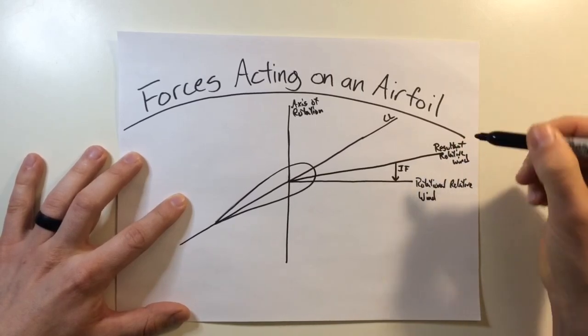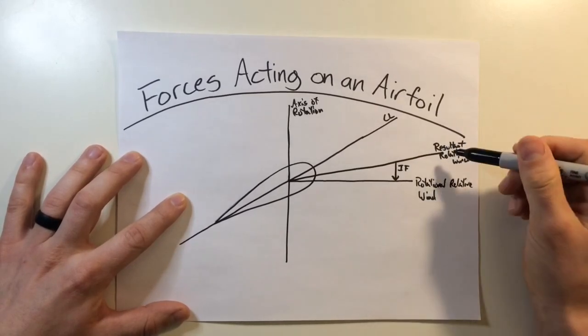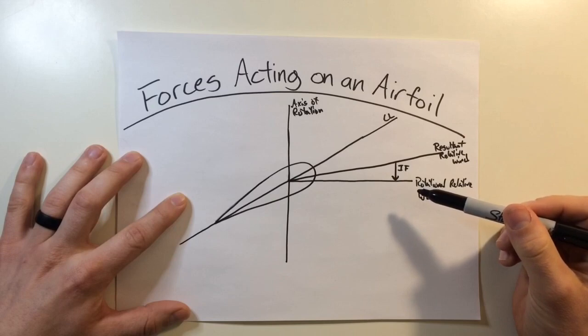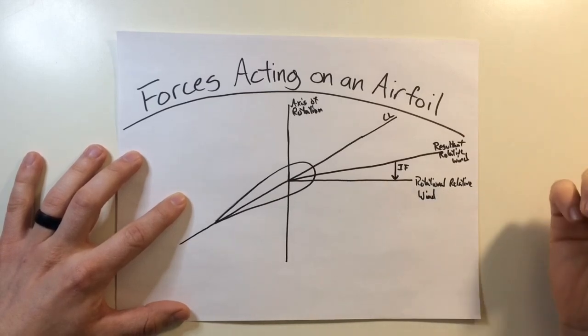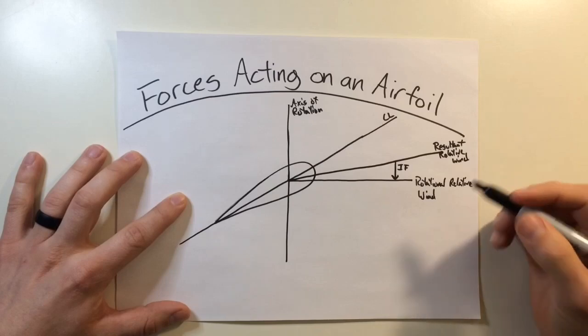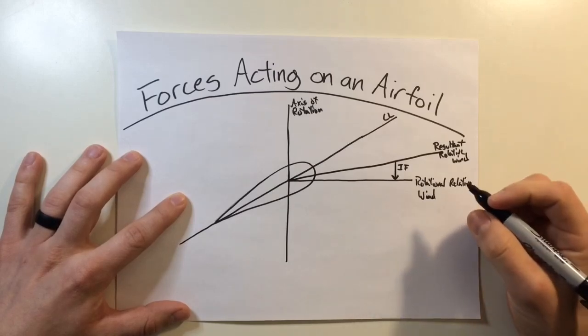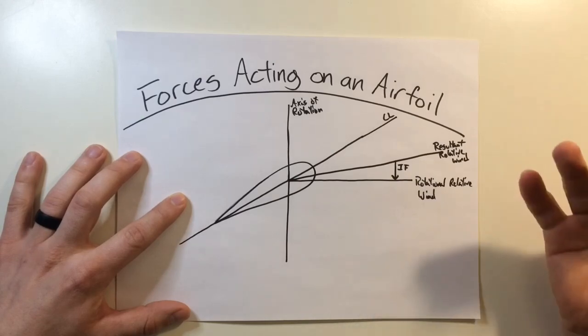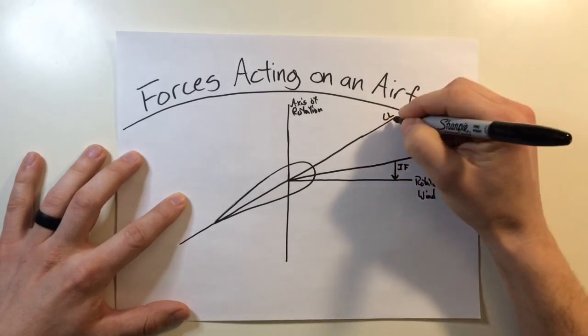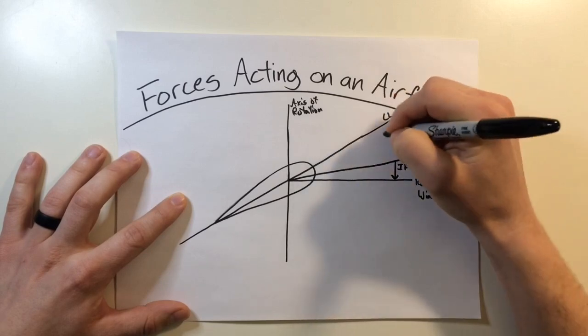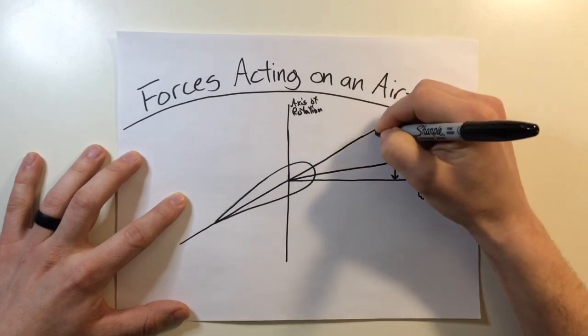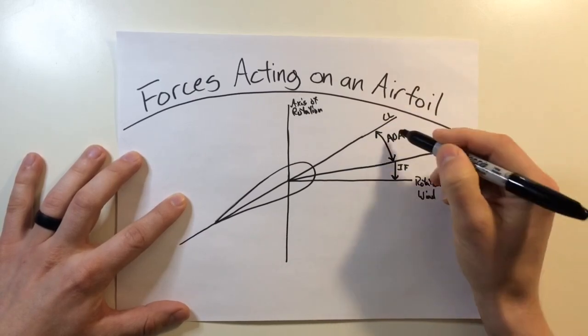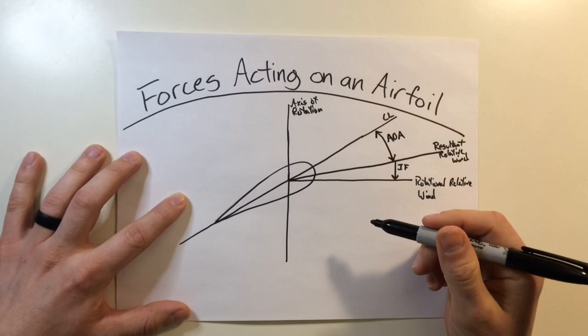And just like the name implies, this is the result of the relative wind as we modify it for induced flow. Now it's from here that we can find things like our angle of attack, which is going to be where we get lift from. Our angle of attack is the angle between the cord line and the resultant relative wind, and it depicts the amount of lift that the airfoil is producing. So this angle right here is our angle of attack. This is our lift. This is where we're getting that lifting force on the airfoil.